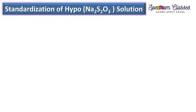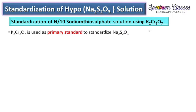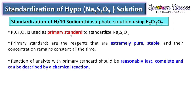Now coming to the standardization of hyposolution. The standardization of this hyposolution will be done using K2Cr2O7. The reason we use K2Cr2O7 is that it behaves as an oxidizing agent and it is also a primary standard, while sodium thiosulfate behaves as a reducing agent. Primary standard compounds are those which are extremely pure, stable, and whose concentration remains constant throughout time. The reaction of the analyte with a primary standard should be reasonably fast, complete, and describable by a chemical equation — all conditions which K2Cr2O7 satisfies.